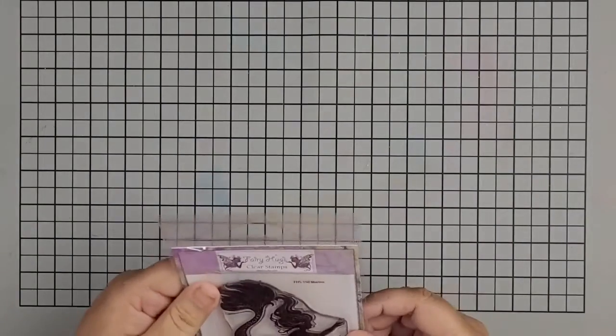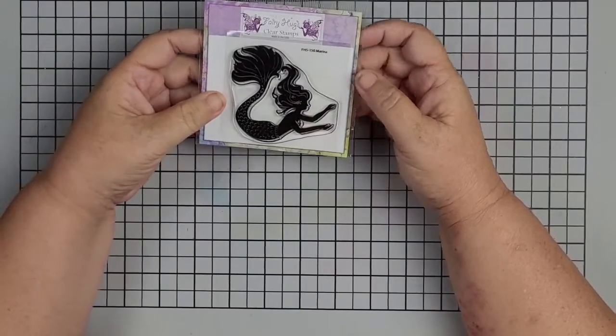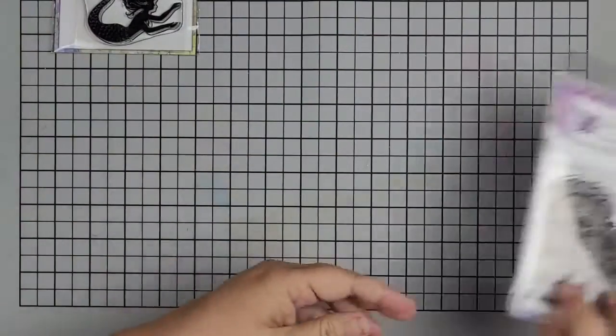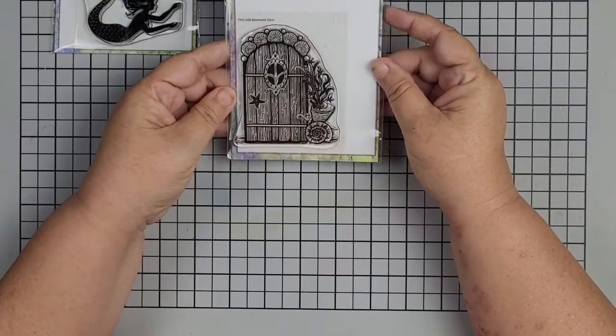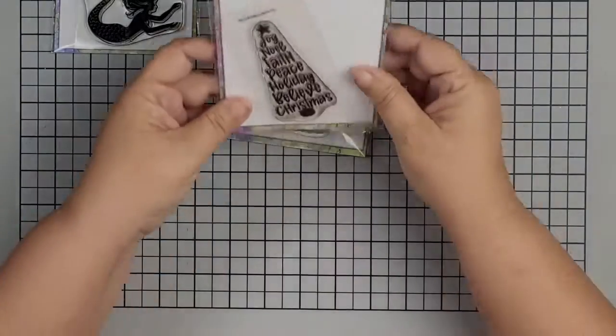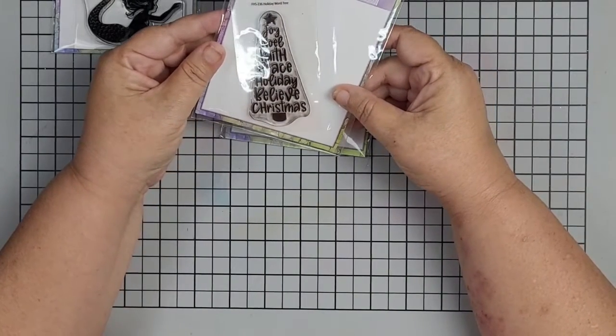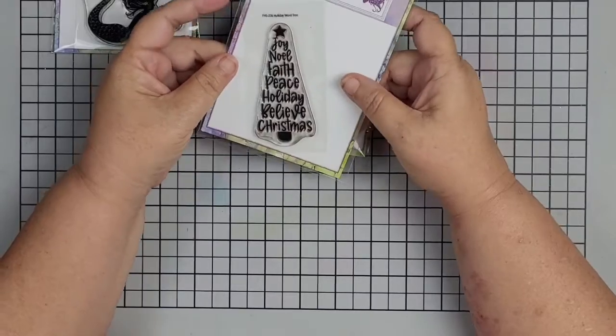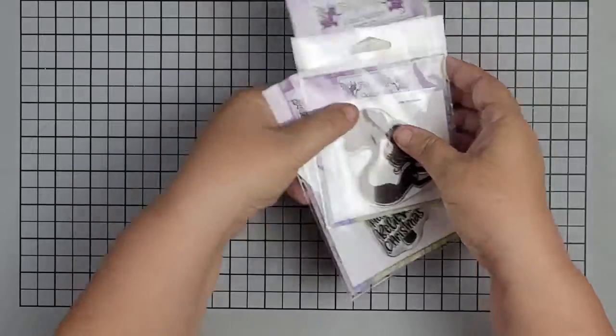Hey there friends and fellow crafters, it's Leanne and I am here today with Fairy Stamper. Today I am going to be using FHS150 Marina, FHS148 Mermaid Door, and I'm going to round it all off with FHS236 Holiday Word Tree. So let's go ahead and get inky and get this project done.